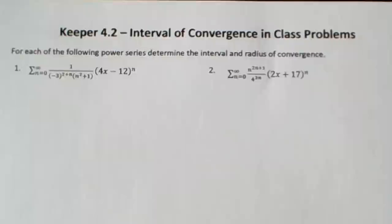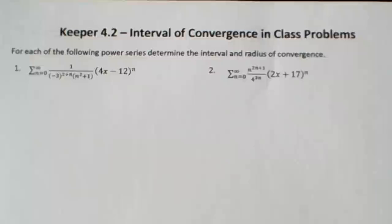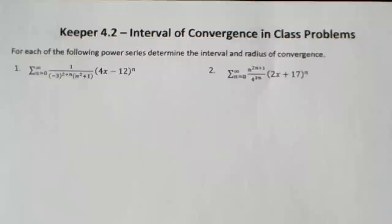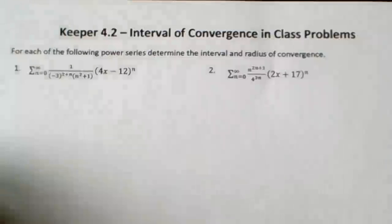Keeper 4.2: interval of convergence. This is very similar to what we did yesterday, except these problems are not geometric, so I can't use the 1 over 1 minus x formula. I have to use something else — preferably the ratio test, but you can also use the root test, because both prove absolute convergence. There are three scenarios: convergence on an interval, divergence, or absolute convergence.